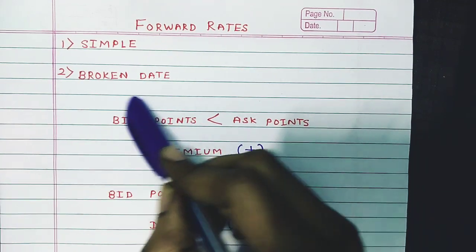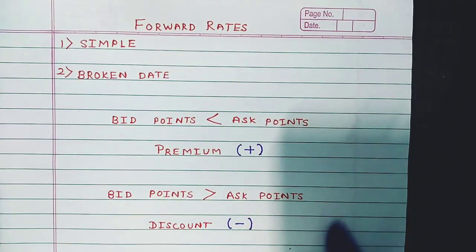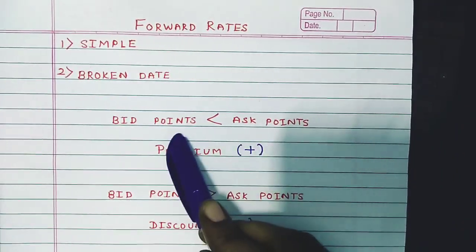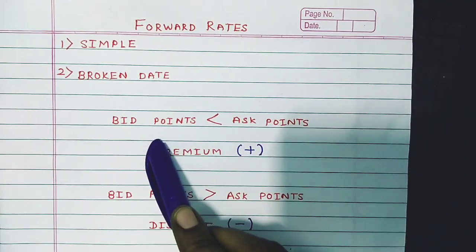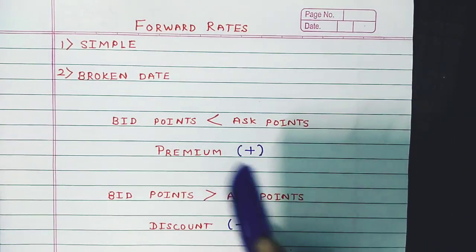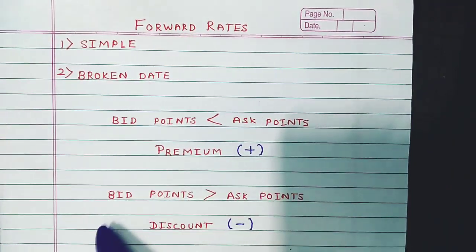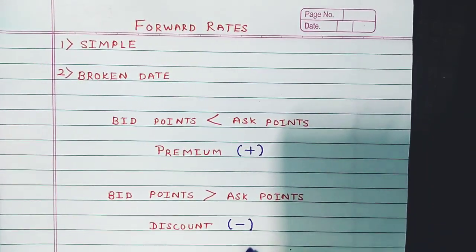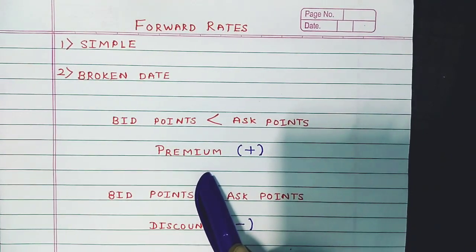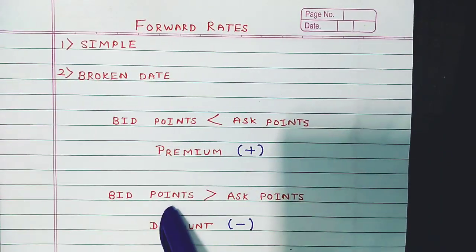Before starting both types of sums, you have to understand a very simple basic. They will give you the bid points and ask points in the question. The first step is to always compare the bid points with the ask points. If the bid points are lower compared to the ask points, it means the currency is available at a premium and we have to add these points. If the bid points are higher compared to the ask points, the currency is available at a discount and we have to subtract these points from the bid rate as well as from the ask rate.